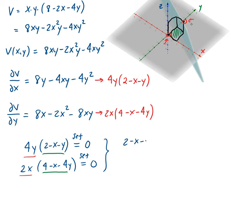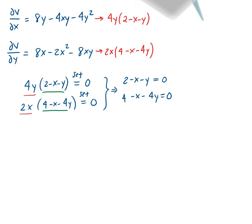From the factored equations, we get 2 − x − y = 0, which is equation 1, and 4 − x − 4y = 0, which is equation 2. Rearranging, equation 1 is x + y = 2, and equation 2 is x + 4y = 4. We can solve this system using elimination, substitution, or matrices.